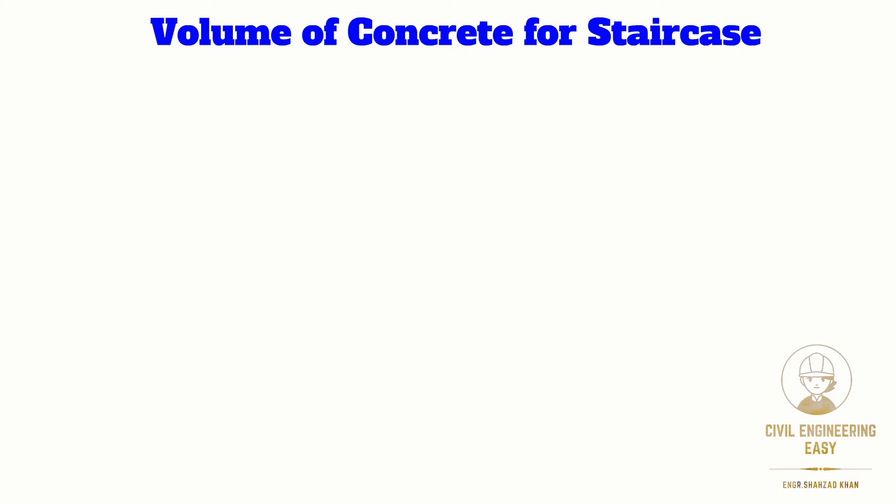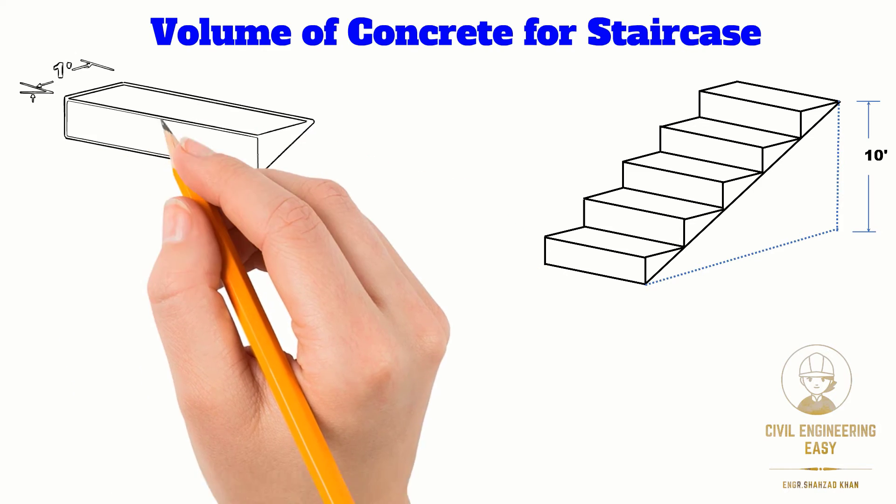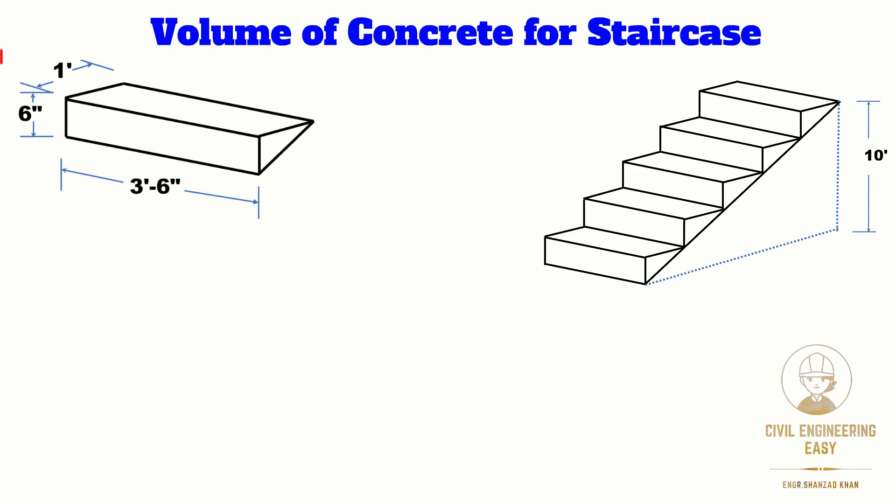The drawing for the staircase is shown in the given figure. The height of the riser is 6 inches and the width of the tread is 1 foot. The riser and tread make one step. The length of one stair is 3 feet 6 inches. We need to find out the volume of concrete based on the given drawing.